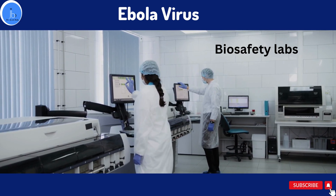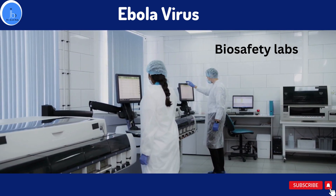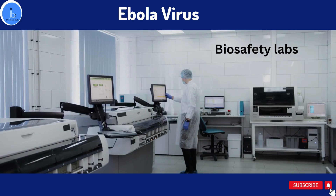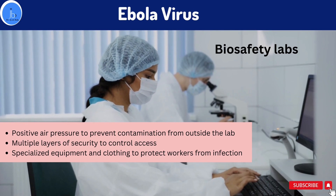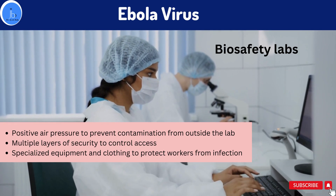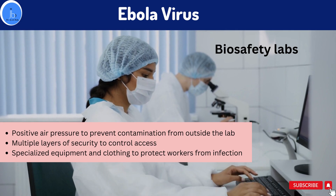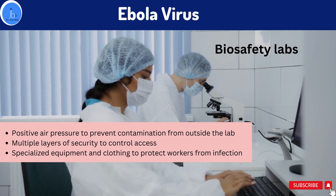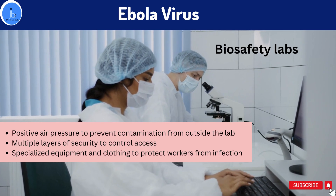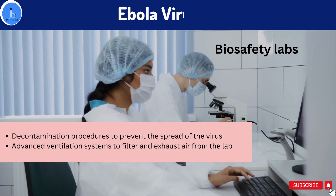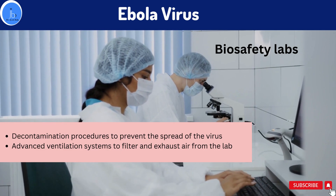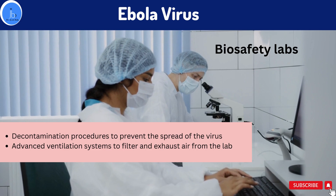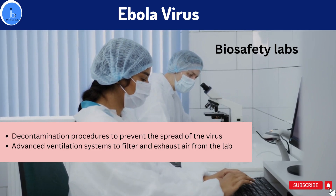To work on Ebola, you need to work in Biosafety Level 4 (BSL-4) laboratories. These specialized facilities are designed to protect laboratory workers from infection. BSL-4 labs feature positive air pressure to prevent outside contamination, multiple layers of security, specialized equipment and clothing to protect workers, decontamination processes to prevent virus spread, and advanced ventilation systems to filter and exhaust air. Working in BSL-4 labs requires significant funding and highly trained scientists.